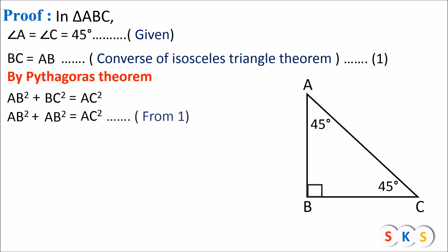Adding AB squared and AB squared, we get 2AB squared equals AC squared. Now shifting the 2 to the other side, we get AB squared equals 1 upon 2 times AC squared. Now we will take the square root on both sides.